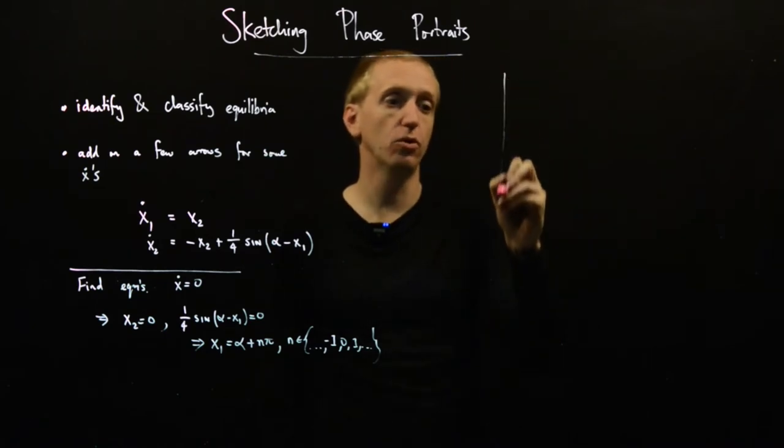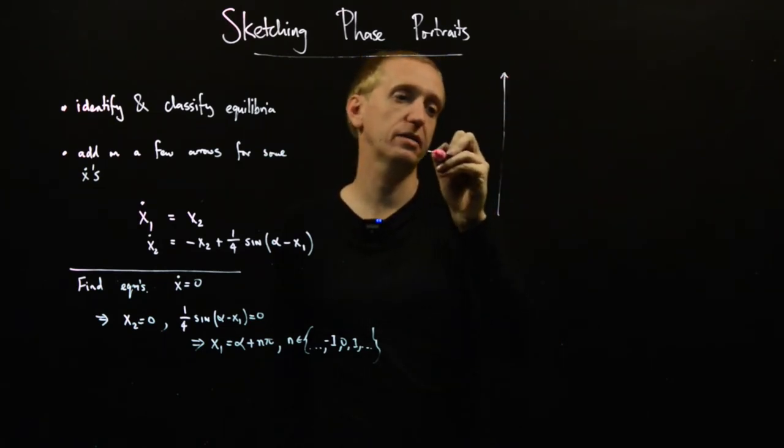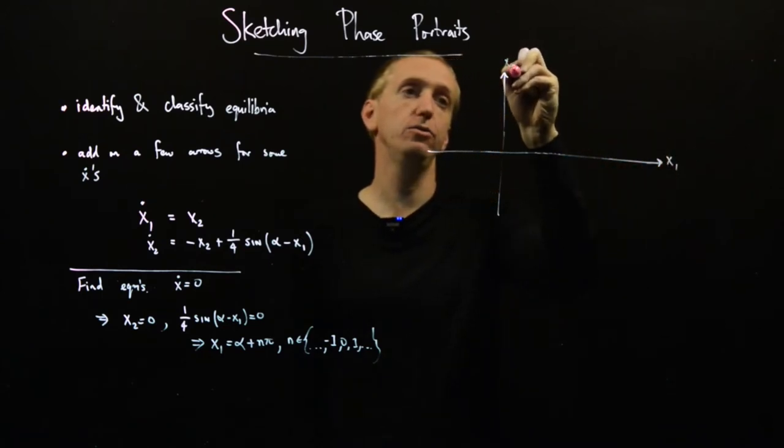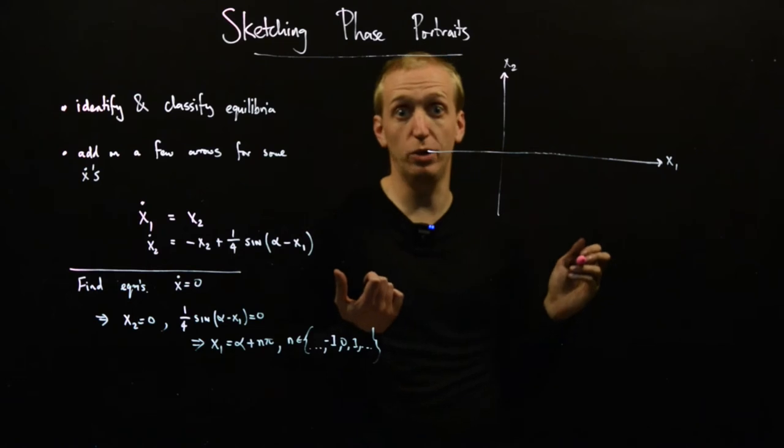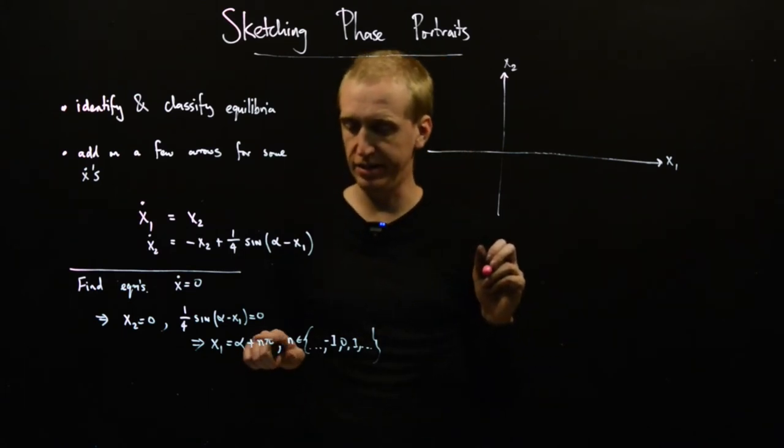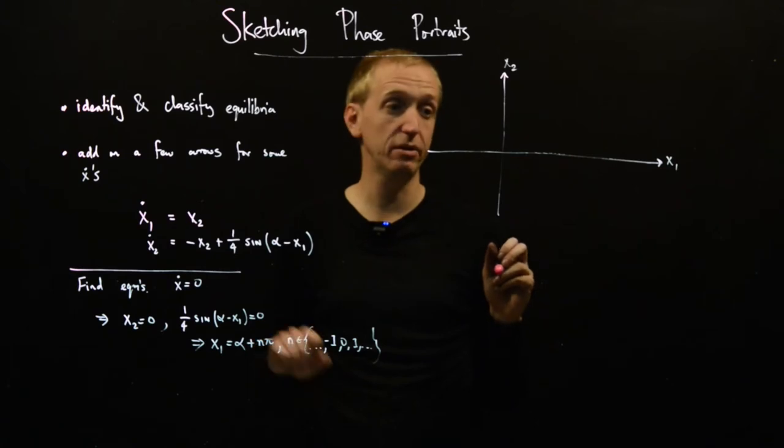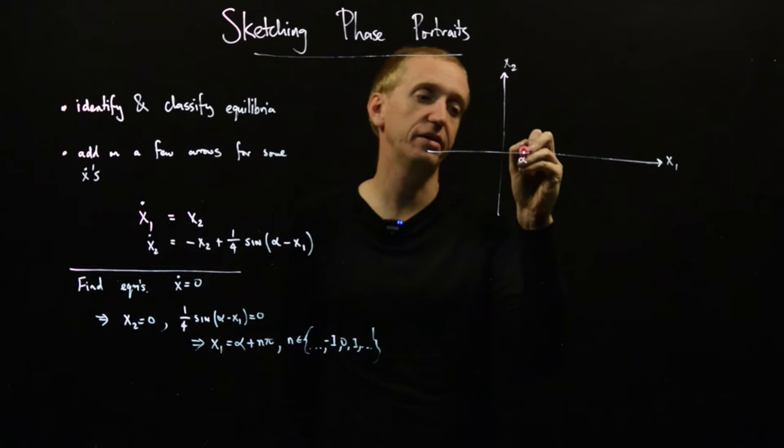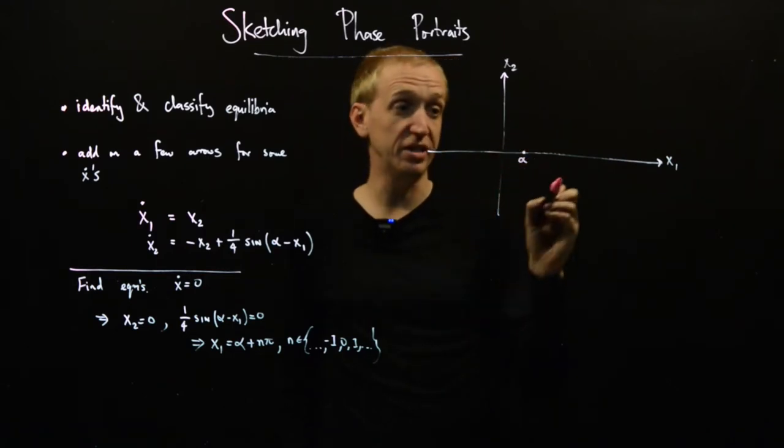So we draw on our phase portrait axes x1 and x2, and then let's just mark on some of these equilibrium points. So our first one, the easiest one, is to just set n as equal to zero. So here this is alpha, and so this is an equilibrium point.